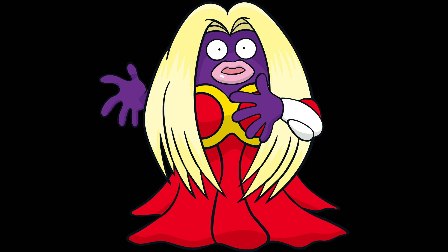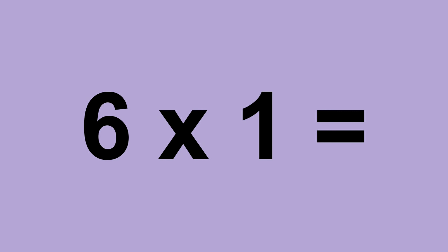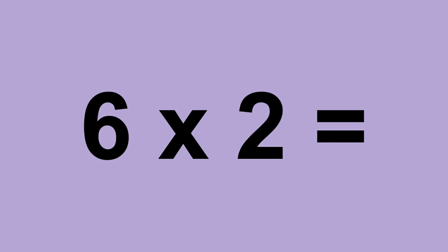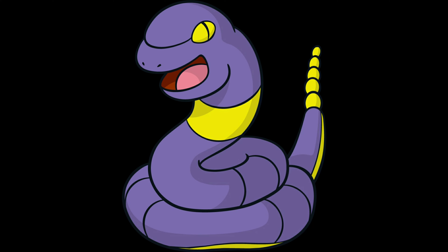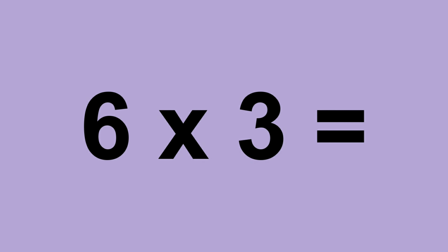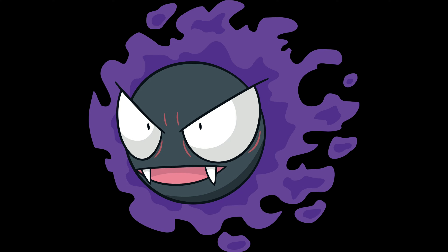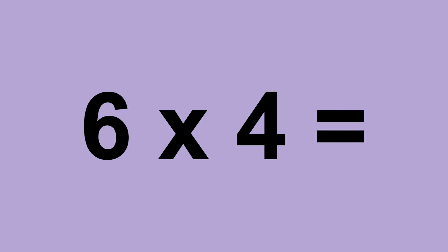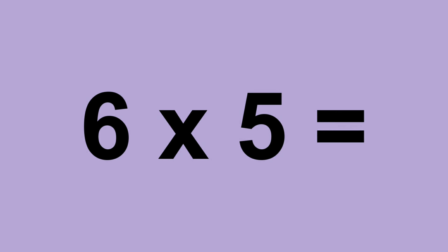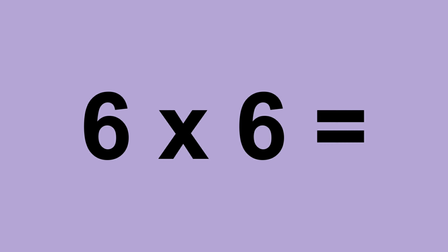Six times zero equals zero. Six times one equals six. Six times two equals twelve. Six times three equals eighteen. Six times four equals twenty-four. Six times five equals thirty. Six times six equals thirty-six.